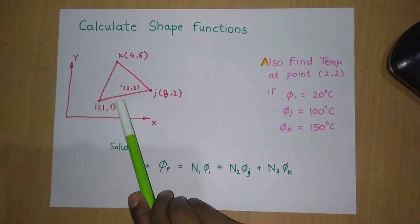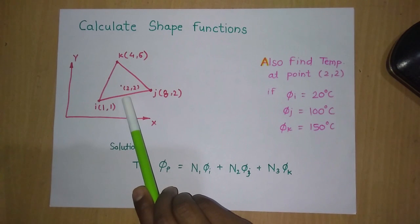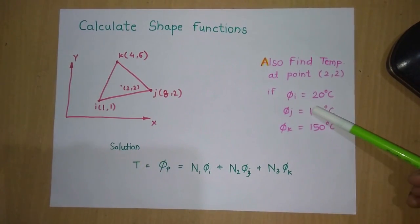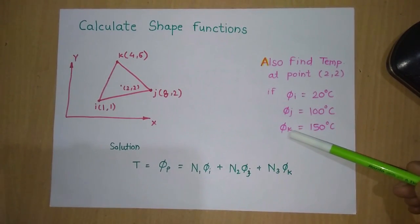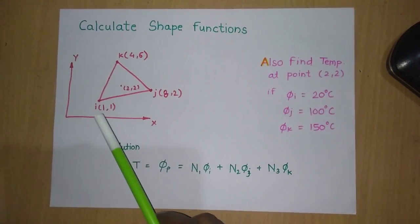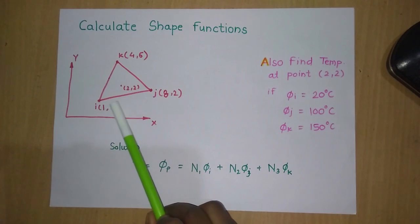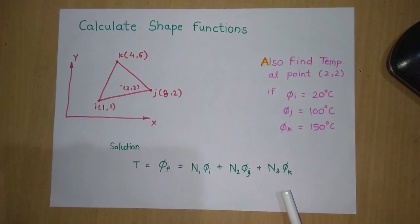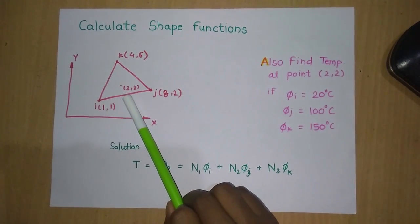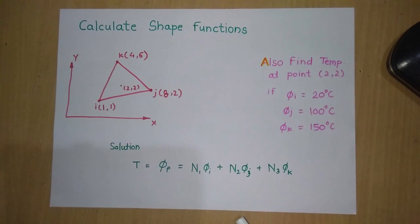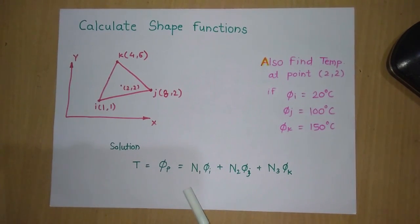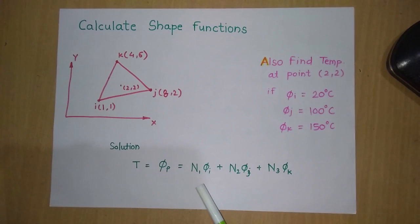The three nodes are i, j, and k, and there is a point P given in the middle of the triangular element with coordinates (2, 2). We also have three nodal values of temperature: φi, φj, and φk — the temperatures at each node. We want to find the temperature at point P, so we start from the final equation: φp equals N1·φi plus N2·φj plus N3·φk.